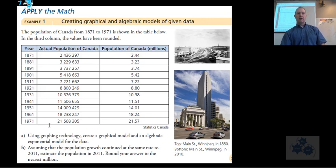Let's just read the question. It says the population of Canada from 1871 to 1971 is shown in the table below. In the third column, the values have been rounded. There's a couple pictures too that are kind of interesting. Main Street in Winnipeg in 1880 and then in 2010.